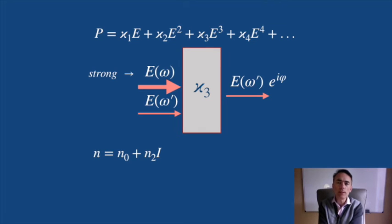N₀ is the real part of the linear index of refraction, but for high irradiance, we can see that the index of refraction begins to depend on that incident irradiance, where N₂ is related to χ₃.